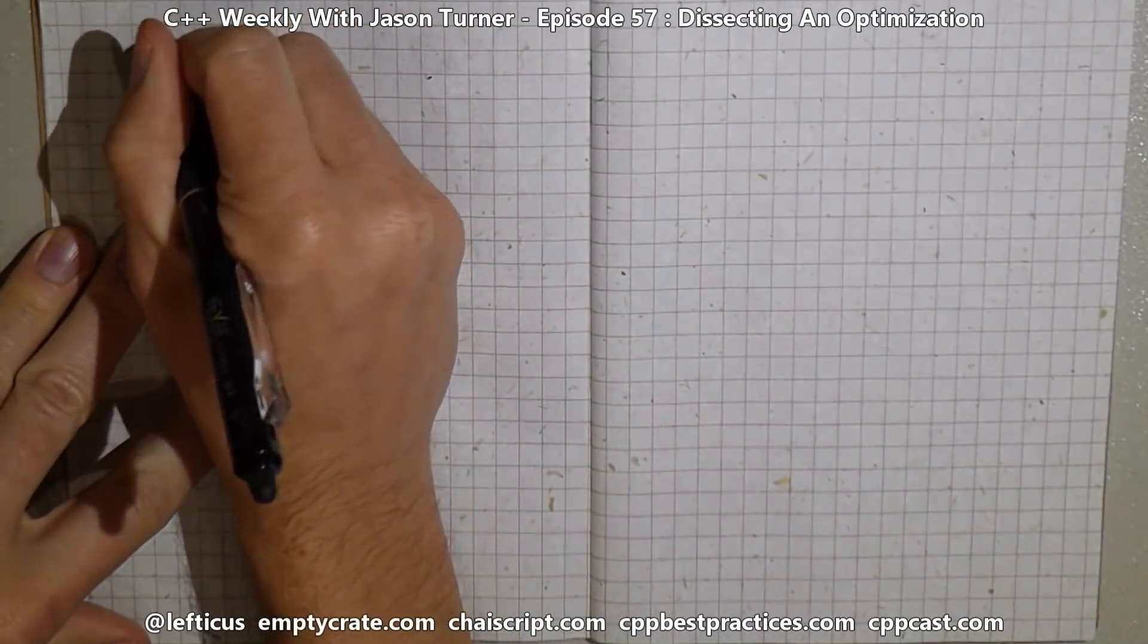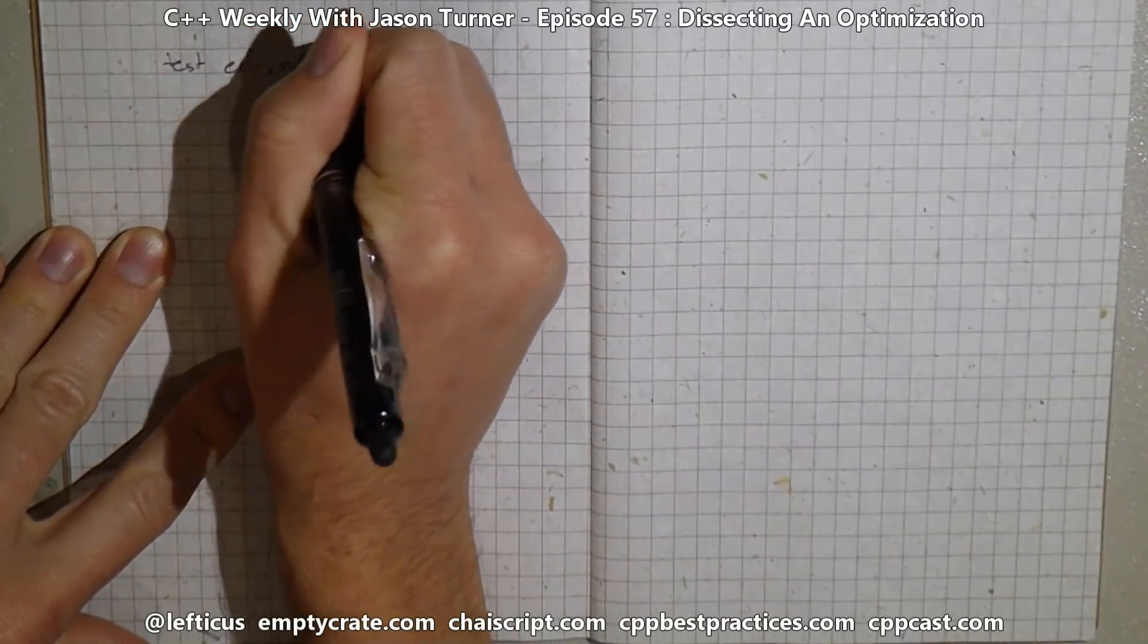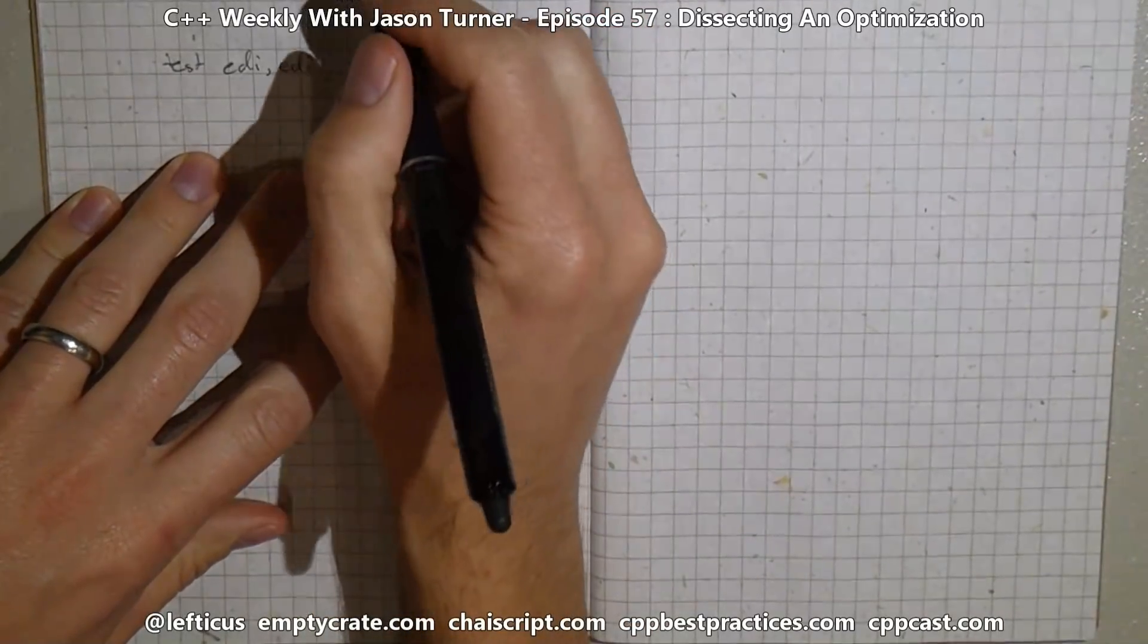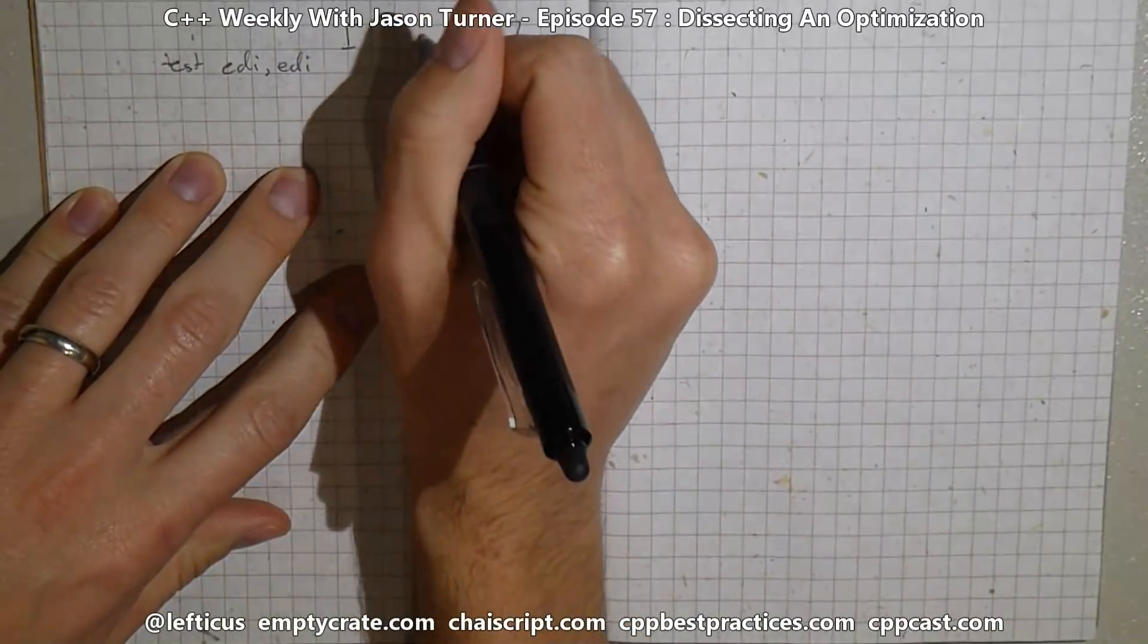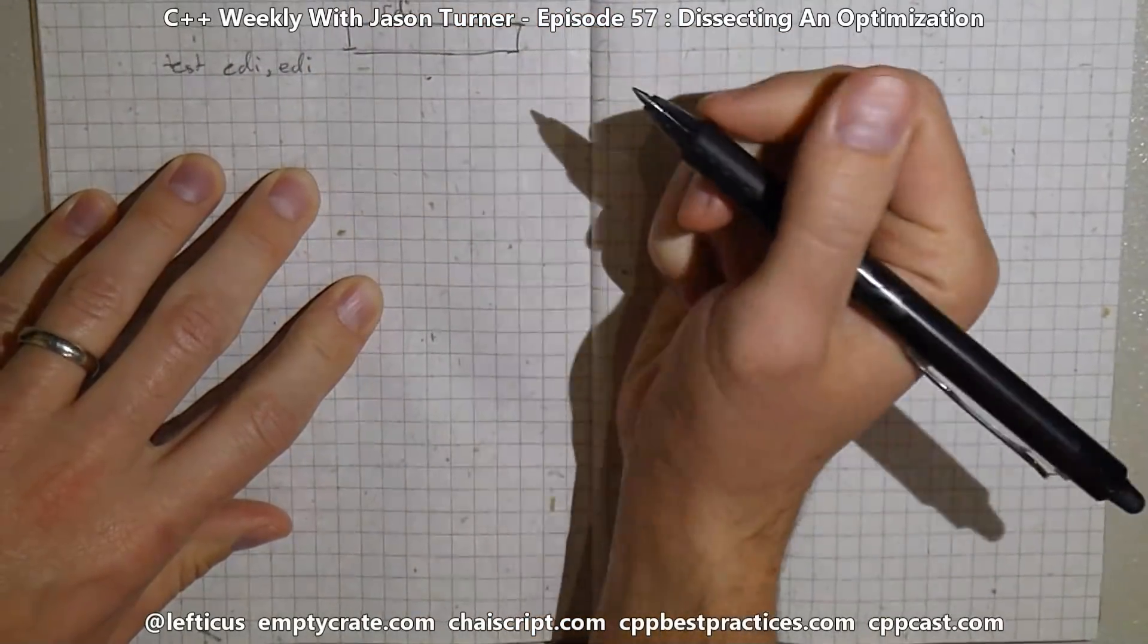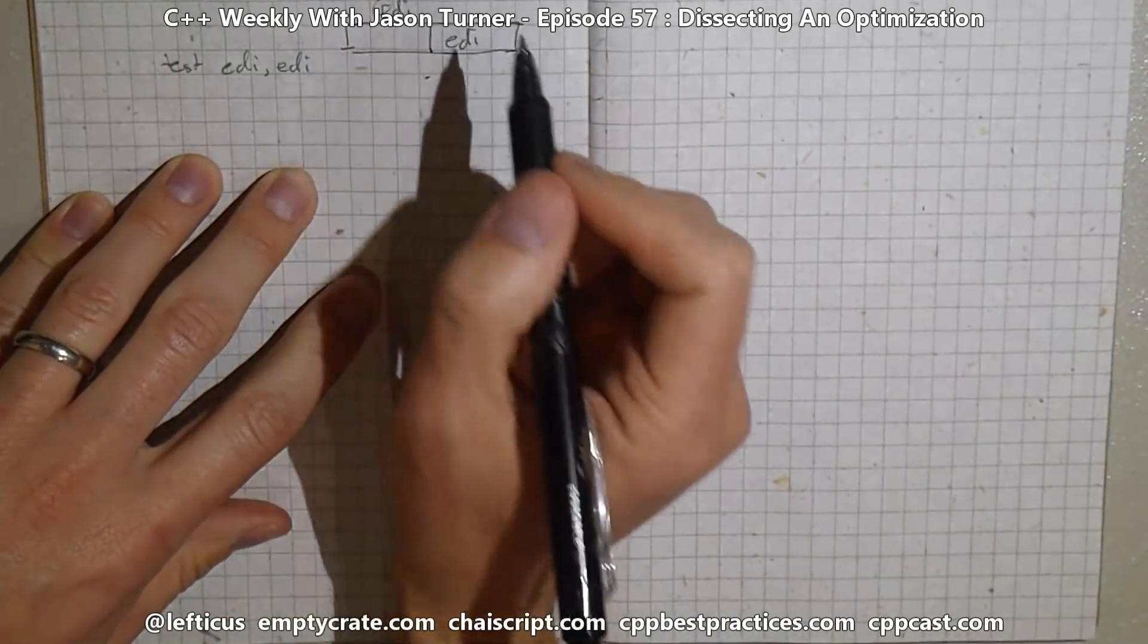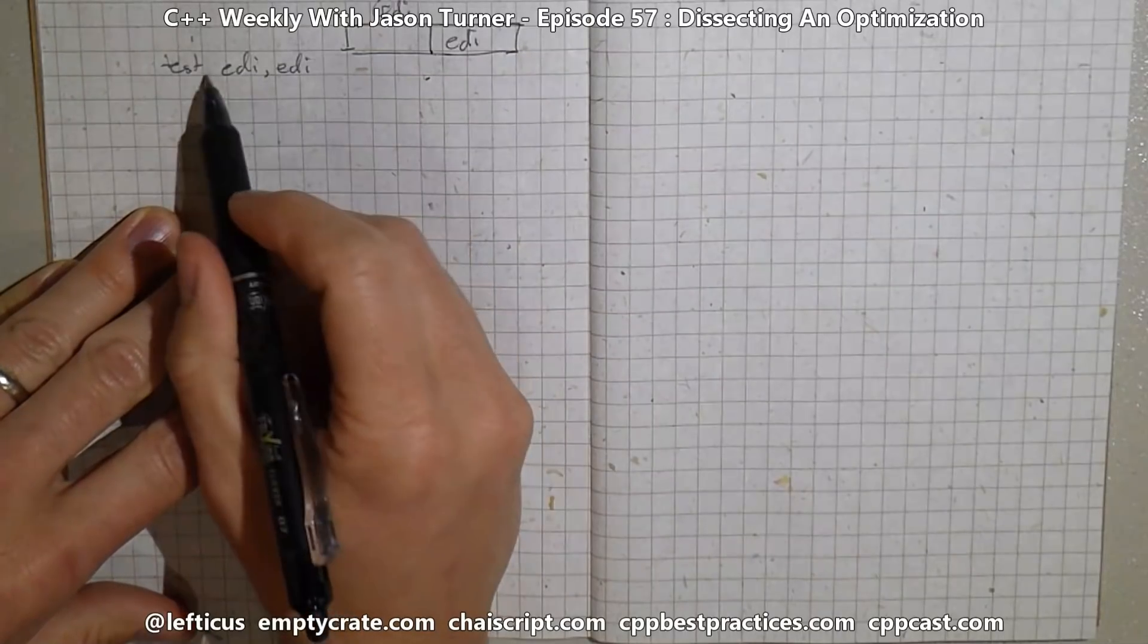So our first line is test EDI, EDI. Now the first thing that we need to remember is that we're actually working with a 32-bit integer here. And our Intel registers are split up something like this. We've got our 64-bit register called RDI, and the lower half of it is EDI, the 32-bit, the extended register. And R is referring to the entire 64-bit register. So in this case we're doing a bit test of EDI against EDI. We're essentially saying is EDI zero?